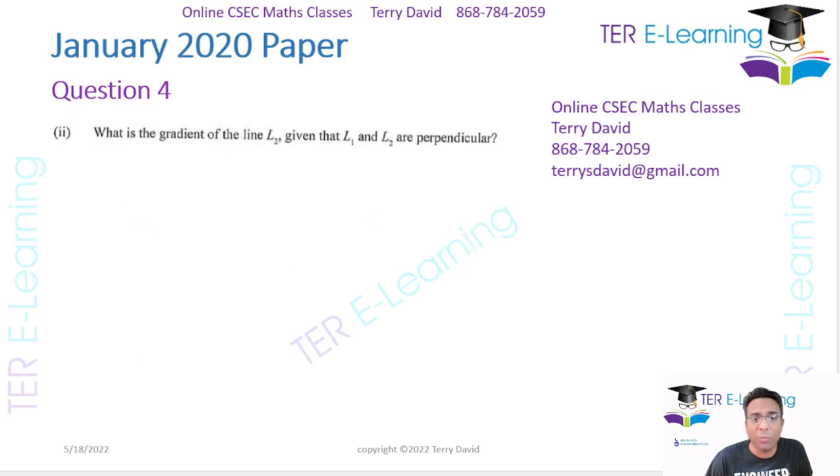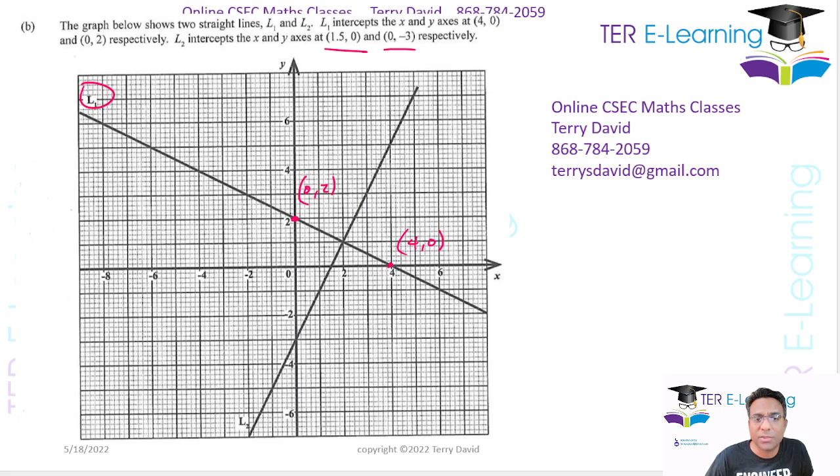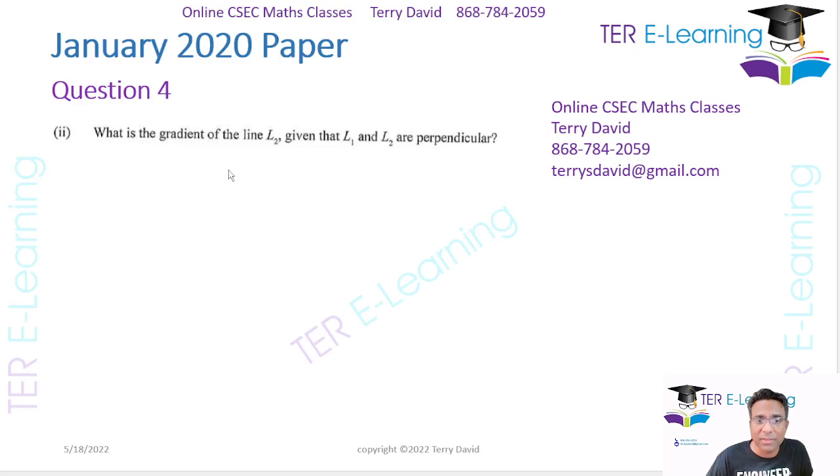Now, they said, what is the gradient of L2 given that L1 and L2 are perpendicular? So when they say these lines are perpendicular, it means that they cut at 90 degrees. There's a relationship between two lines that are perpendicular. When I multiply the gradients, I should get minus 1. So the gradient of L1 multiplied by the gradient of L2 should be equal to minus 1. That's for all perpendicular lines.